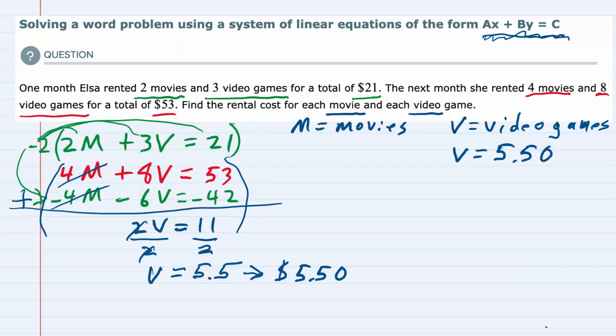So what I'm going to do is I'm going to take that price here for video games, 5.50, and I'm going to substitute it in any of the equations that we started with, either this green one or the red one. Since the numbers are a little smaller in the green one, I'll choose that one.